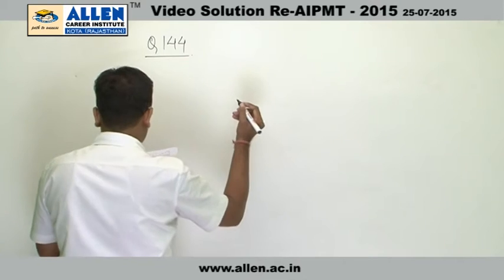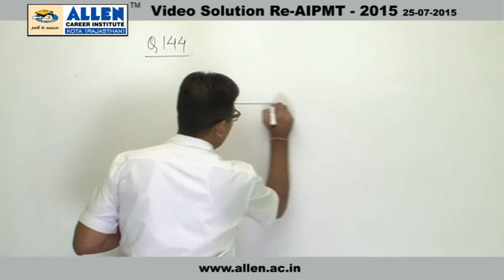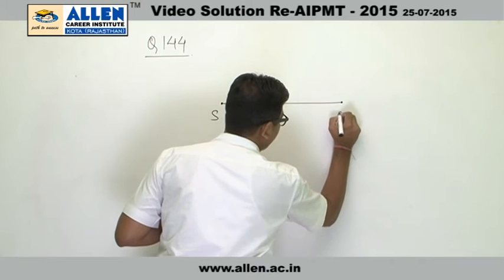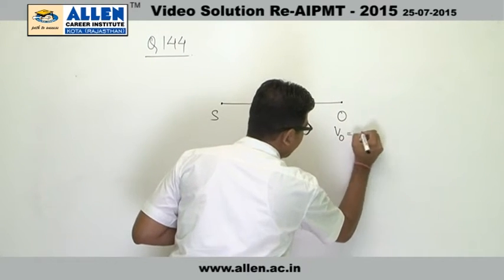A diagram is also given in the question that we have a sound source, we have an observer. The observer is stationary, so the speed of the observer will be 0.